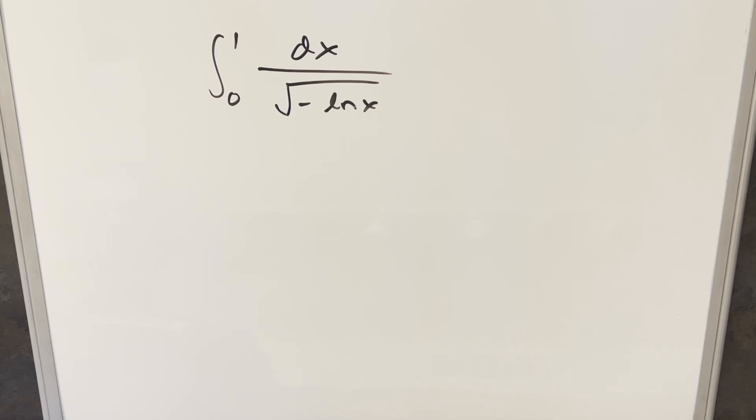We've got a fun problem here today: the integral from 0 to 1 of 1 over the square root of minus ln x dx. I was really liking this one. It's a nice combination of being very easy and still kind of rewarding with a satisfying solution.